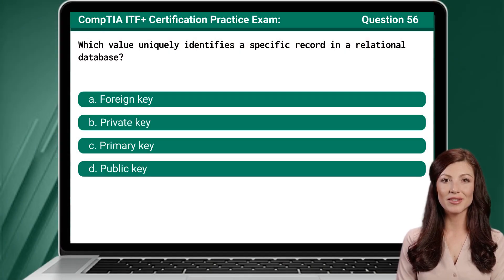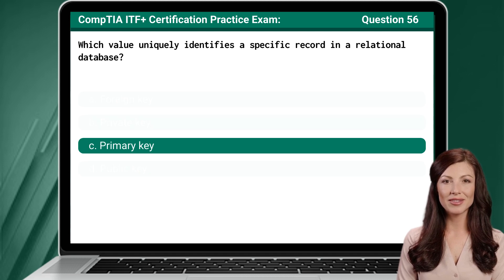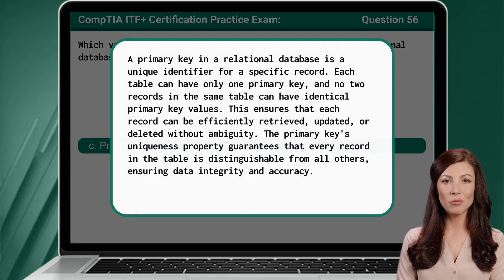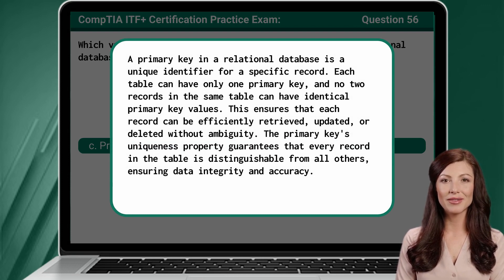Question 56. Which value uniquely identifies a specific record in a relational database? The answer is C: Primary Key. A primary key in a relational database is a unique identifier for a specific record. Each table can have only one primary key, and no two records in the same table can have identical primary key values.